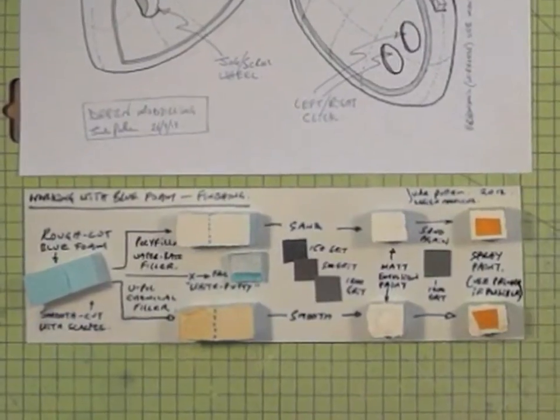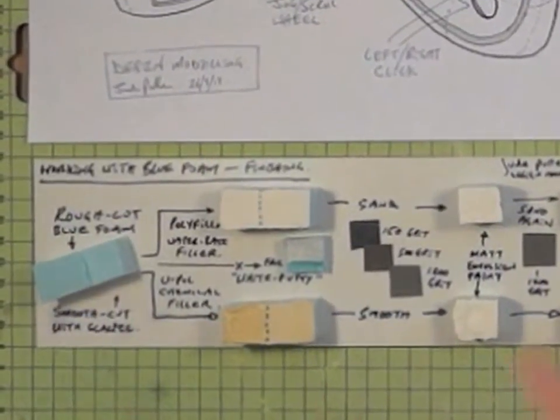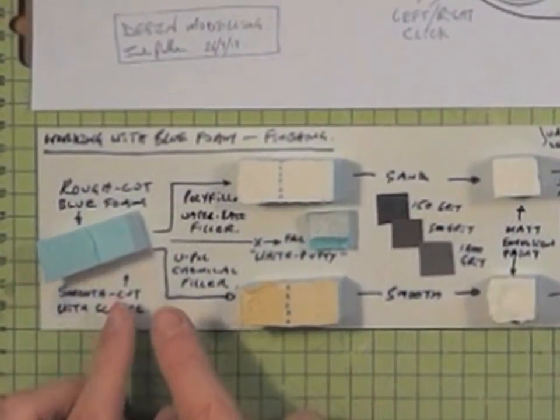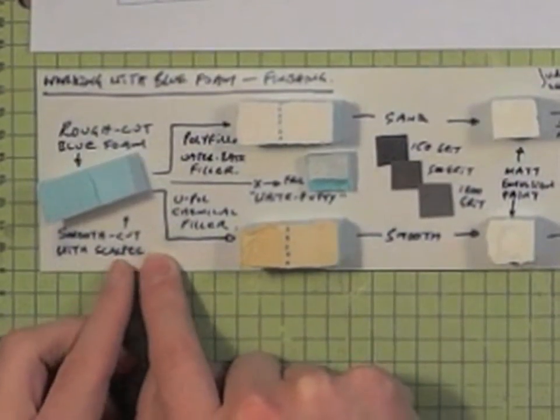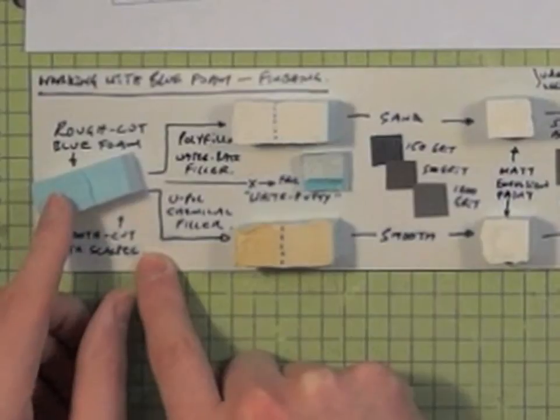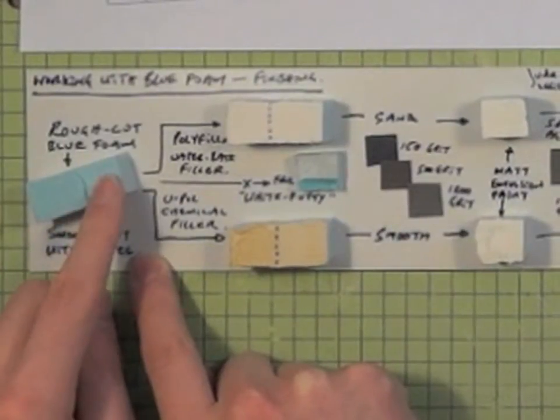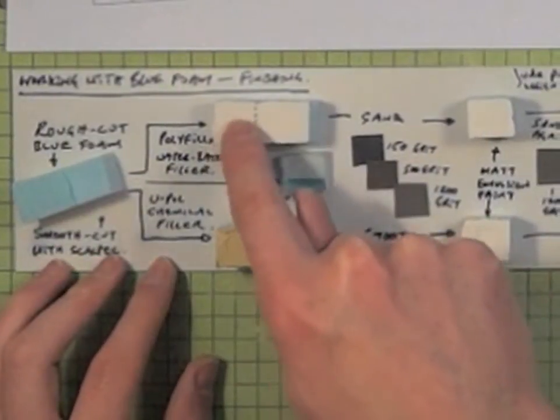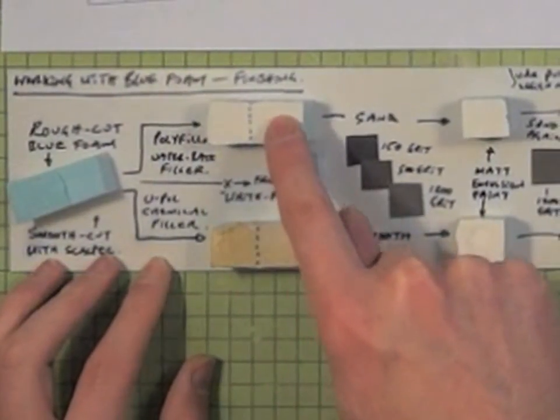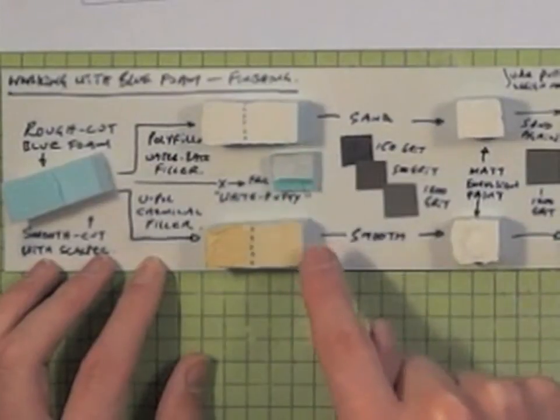So, what I'm going to basically leave that as it is now, and what I've got here is just a little bit of an example of working with blue foam and finishing it. And this is the rough cut, and also cut with a scalpel. And then, if you were to take the polyfiller, as I said, or the spackle, then you can see how it varies in quality as you sand it down.